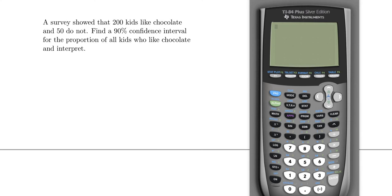Okay, so we have 200 kids that like chocolate and 50 that do not. So the total number of observations is 250 because we have to add them up. The confidence interval is for the kids who like chocolate. That means that x is going to be 200 because success in this problem is liking chocolate.